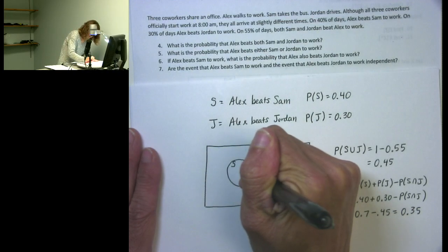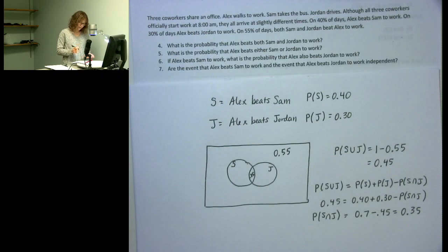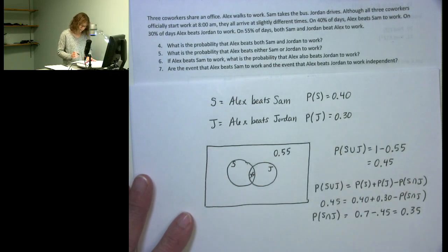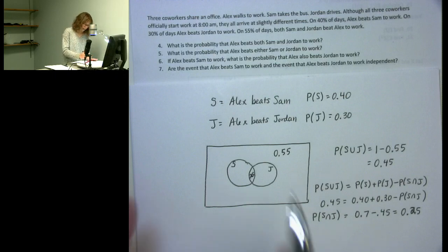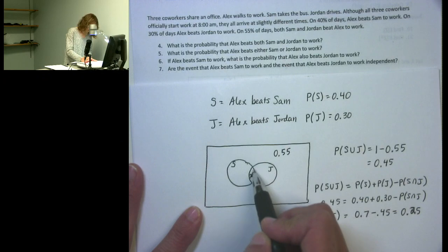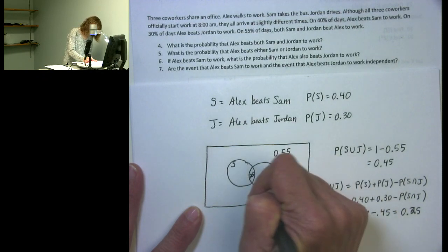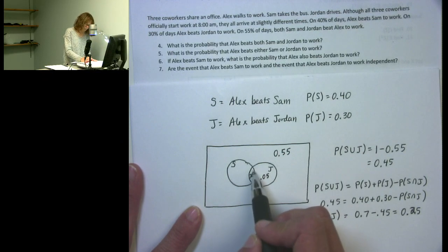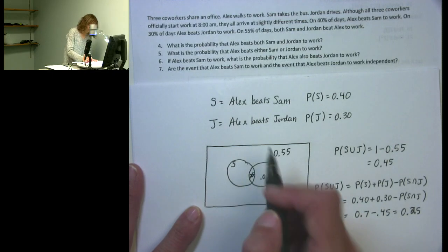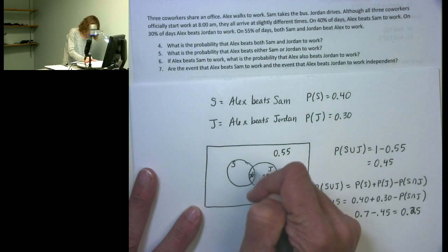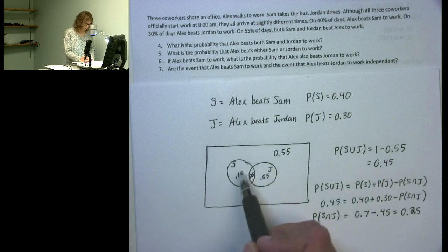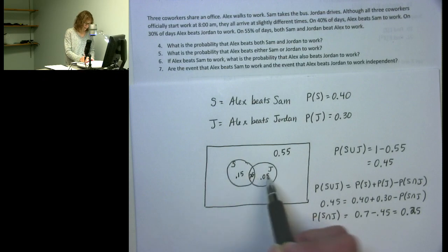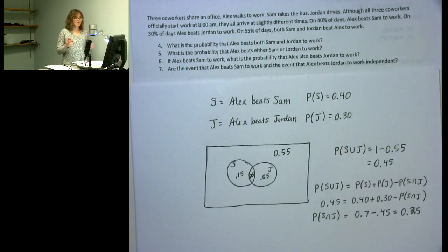The intersection probability is 0.25 — I misspoke earlier saying 0.35, but it is 0.25. The total probability of beating Jordan is 0.30, and 0.25 of that is in the intersection, leaving 0.05 where Alex beats Jordan but not Sam. Alex beating Sam has probability 0.40; 0.25 is in the intersection, leaving 0.15 where Alex beats Sam but not Jordan. Now I have a complete picture of each region's probability.